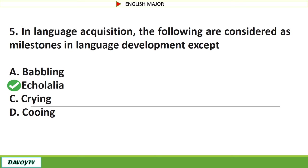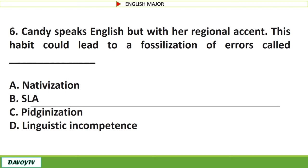Question number 6. Candy speaks English but with her regional accent. This habit could lead to a fossilization of errors called blank. A. Nativization. B. Sloth. C. Pidginization. D. Linguistic incompetence. The correct answer is letter C: Pidginization.